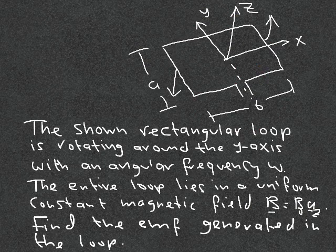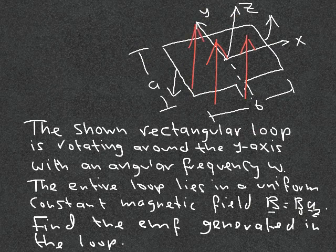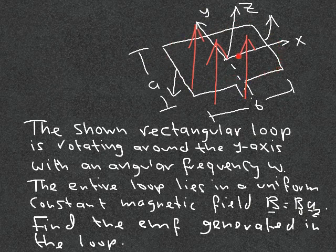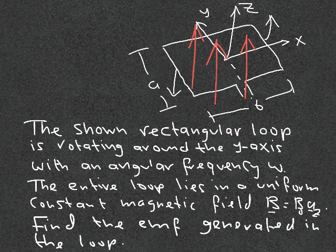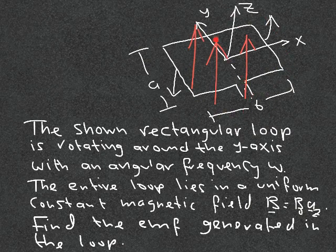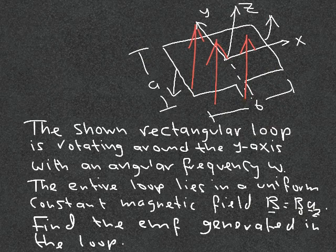The magnetic field flows in the z-direction: a constant field B₀. Integrating in the counterclockwise direction, the normal to the surface is in the z-direction. As the plane keeps rotating around the y-axis, the voltage appearing between the two terminals is sinusoidal — positive in one half of the cycle and negative in the other half. We apply Faraday's law: calculate the flux, take its time derivative, and get the induced EMF.